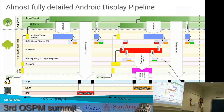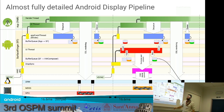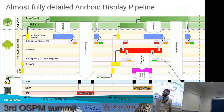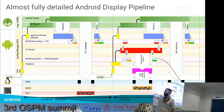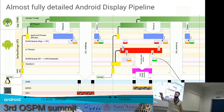Everything starts from the VSync signal triggered by the hardware — by the display controller. This VSync signal is raised and caught by the Hardware Composer, a process that runs within Android. The layout is top-to-bottom from the highest level: the application, then Android, then Linux, and the hardware. From left to right, we have the timeline.